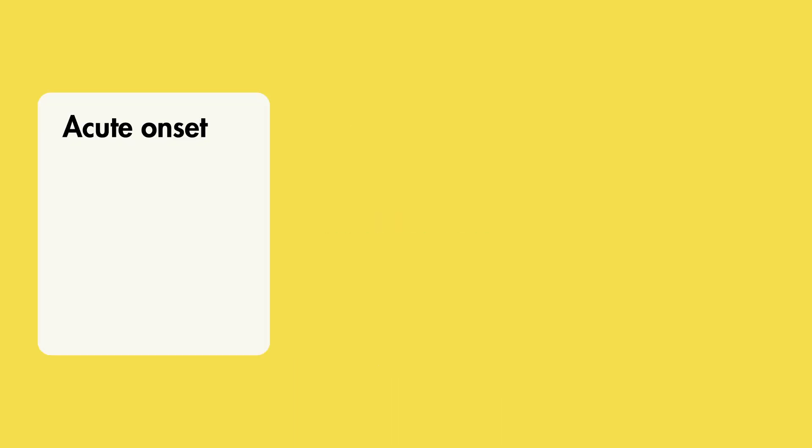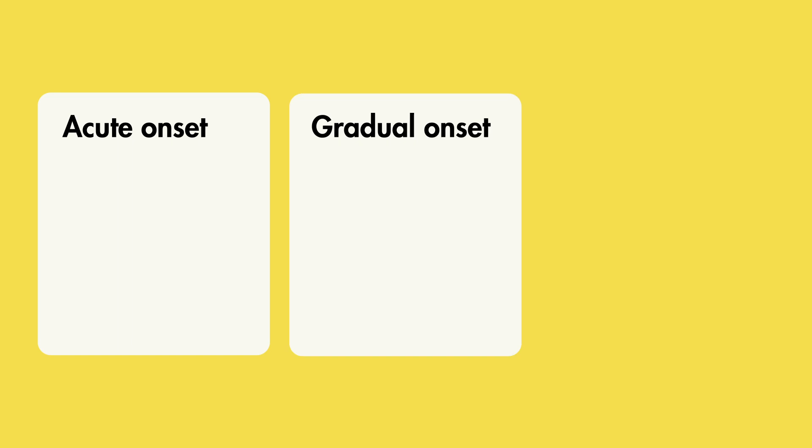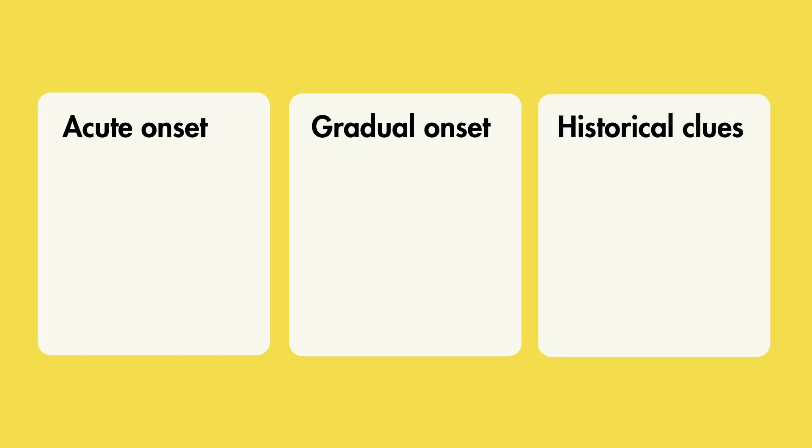For your historical hints, there are three main categories: acute onset, gradual onset, and a basket of miscellaneous medical historical clues.